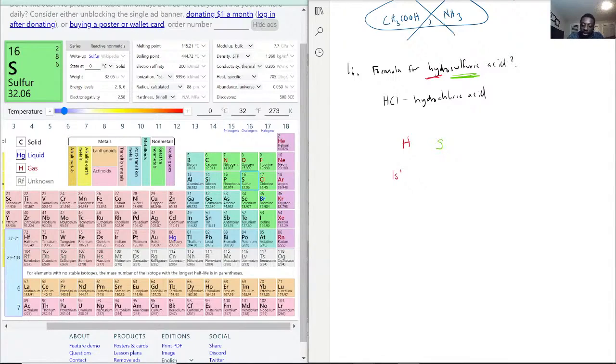For sulfur, okay, it starts at neon, okay. And it's 3s2, okay, 3p4. And these two numbers, 2 and 4, let us know that its valence shell is 6 electrons.